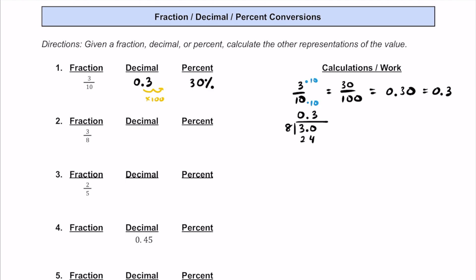3 times 8 is 24. 30 minus 24 is 6. Let's add a 0 and bring it down. 8 times 7 is 56 — that's as close as we can get without going over. Remainder of 4. Add another 0 and bring it down. 8 into 40 is 5 times. 5 times 8 is 40. We get a remainder of 0. So our decimal here is going to be 0.375, or 375 thousandths.